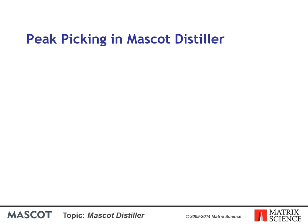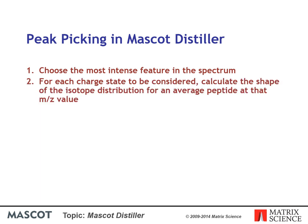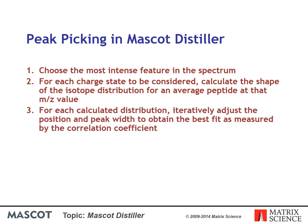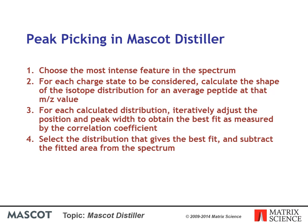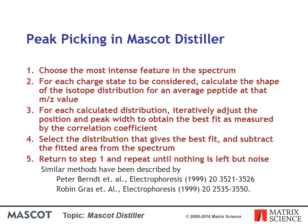Mascot Distiller detects peaks by attempting to fit an ideal isotopic distribution to the experimental data. The steps are: first, choose the most intense feature in the spectrum; second, for each charge state to be considered, calculate the shape of the isotope distribution for an average peptide at that m/z value; and for each calculated distribution, iteratively adjust the position and peak width to obtain the best fit as measured by the correlation coefficient. We select the distribution that gives the best fit and subtract the fitted area from the spectrum. Finally, we return to step 1 and repeat until nothing is left but noise.